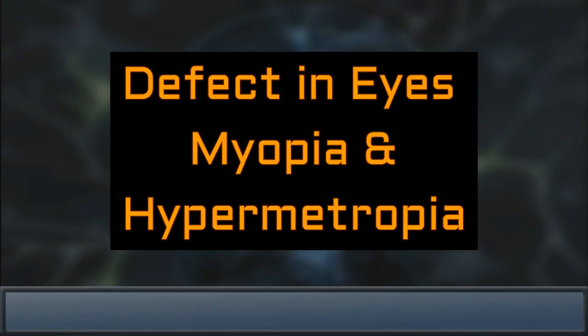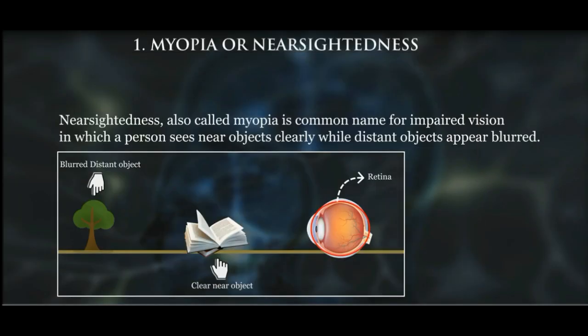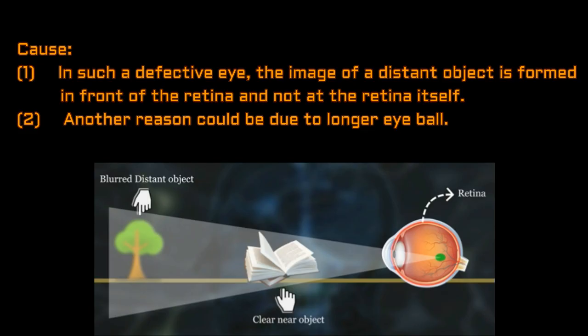Defects in eyes: myopia and hypermetropia. First, let us learn about myopia. Nearsightedness, also called myopia, is a common name for impaired vision in which a person sees near objects clearly while distant objects appear blurred. In such a defective eye, the image of a distant object is formed in front of the retina and not at the retina itself.